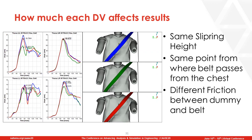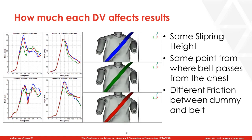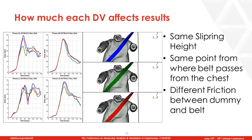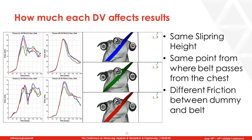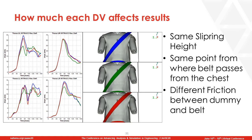Next, let's check how different friction between the dummy and the seatbelt affected the thorax deflection. Here we see 3 different experiments with the same slip ring height and same belt chest position but different friction. The animation of the 3D results alongside the histories shows that the upper left thorax rib results were again significantly affected, as were the lower right rib results, while the upper right rib was not affected and the lower left was affected only towards the end of the simulation.